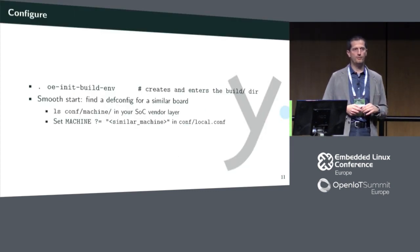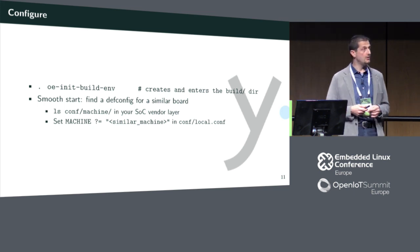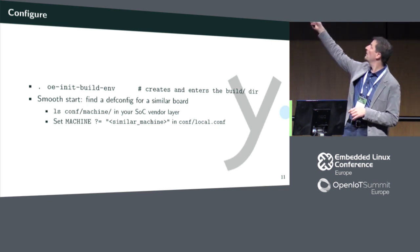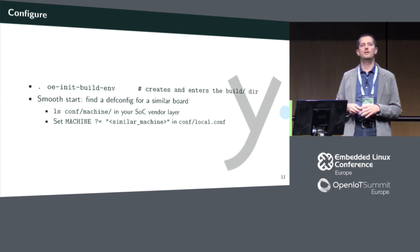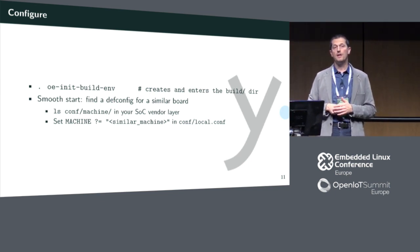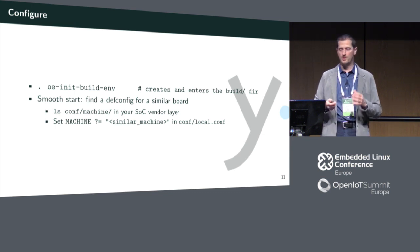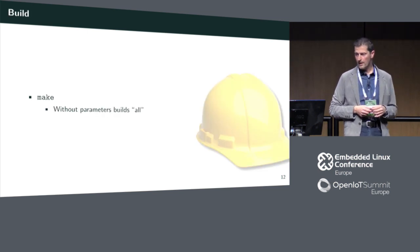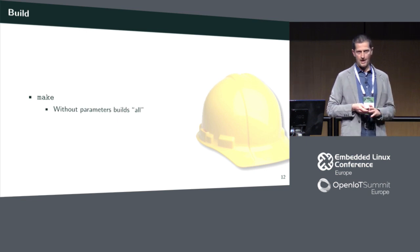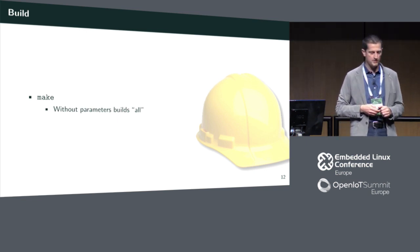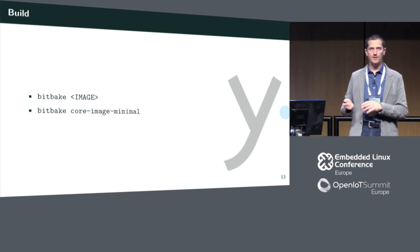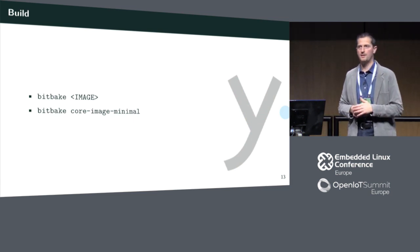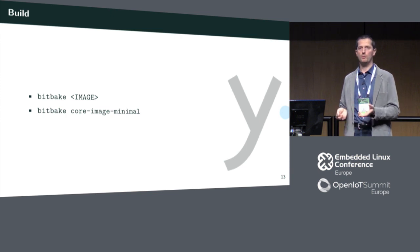Running the build is just a matter of calling make for Buildroot and it will start all of its process. With BitBake you have to supply an argument — you can start with core-image-minimal, which is an image with just the basics to start. Both of them will build a minimal system that boots into BusyBox.